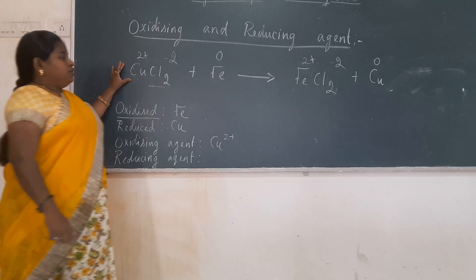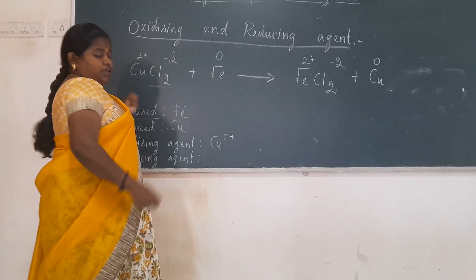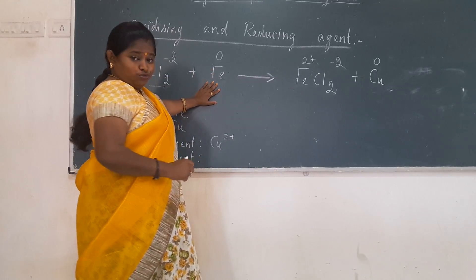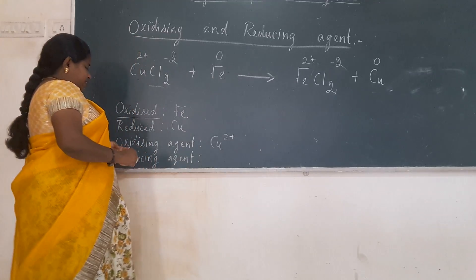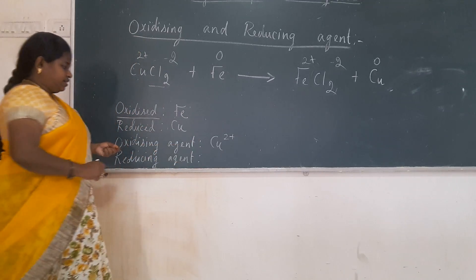So because which reduced, which gains electron, by gaining electron, it makes the iron to lose electron, okay? So in that case, it is oxidizing agent. Copper 2 plus is oxidizing agent.